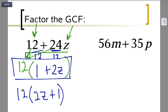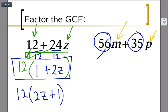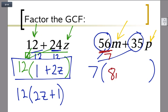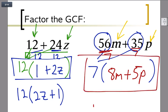Looking at the next problem, they both have variables — an m and a p — but no variables in common. So we're just looking at 56 and 35. Working through their factors, you'll see that 7 goes into both. Dividing: 56 divided by 7 is 8, so we have 8m; and 35 divided by 7 is 5, so 5p. The 7 goes out in front, and the leftovers — 8 and 5 — go inside the parentheses.